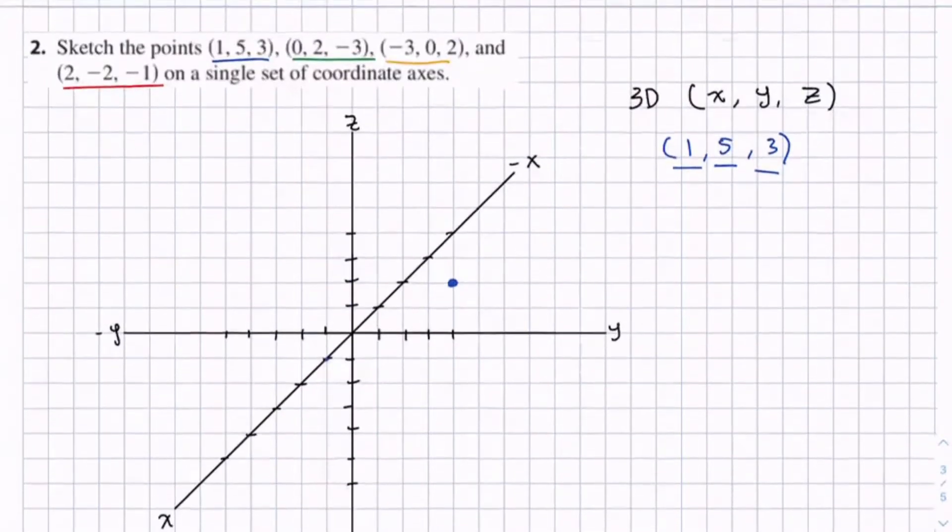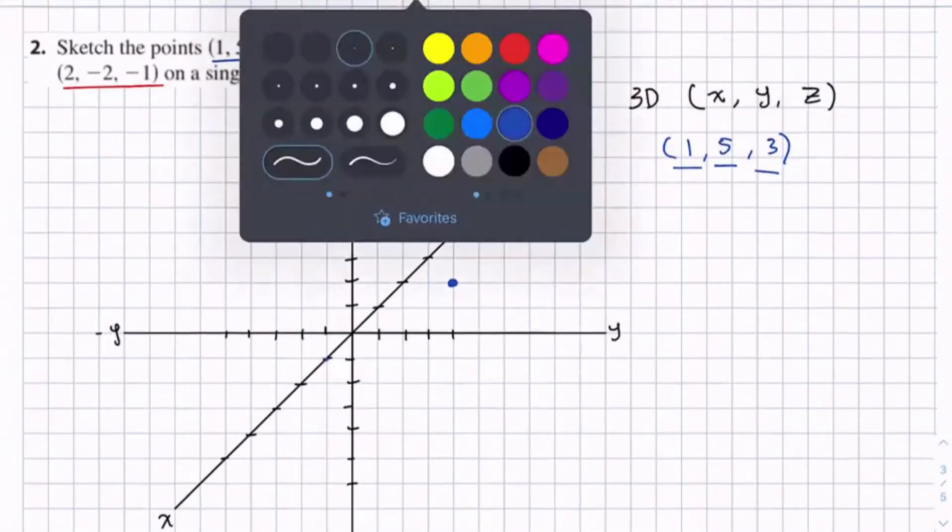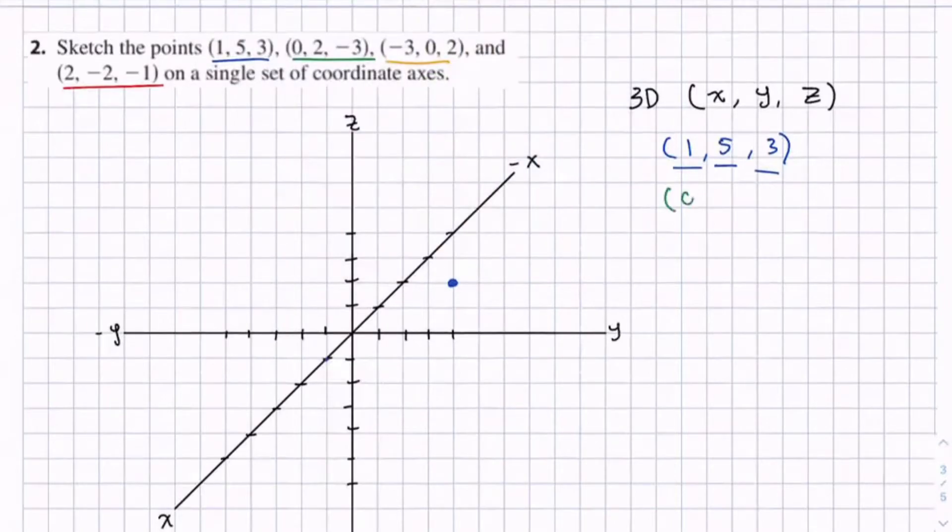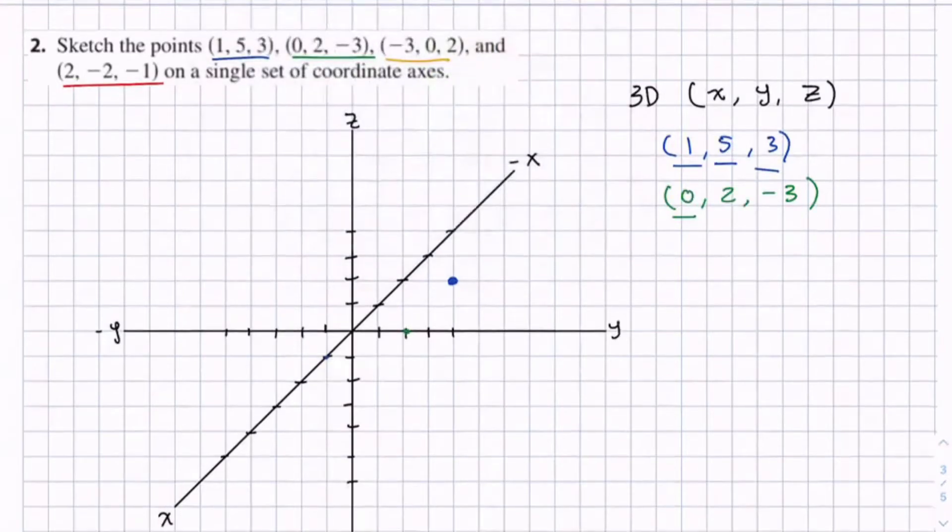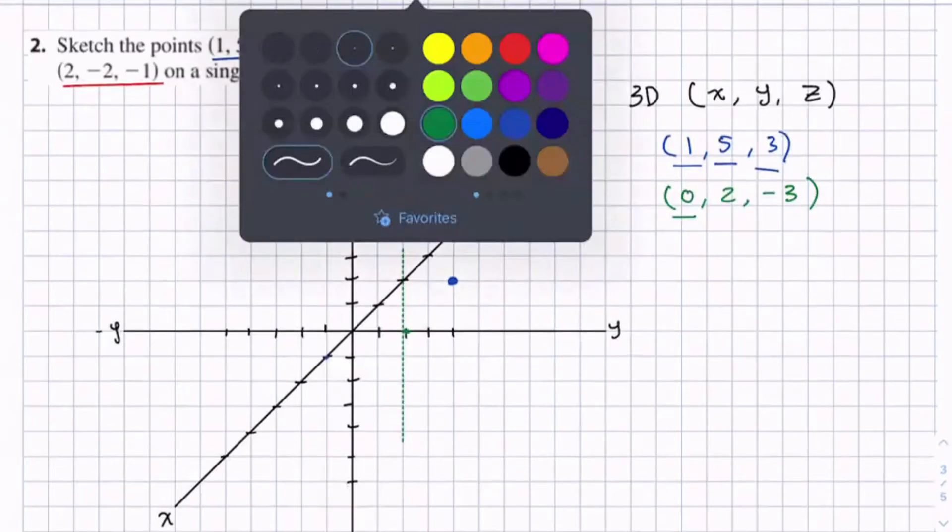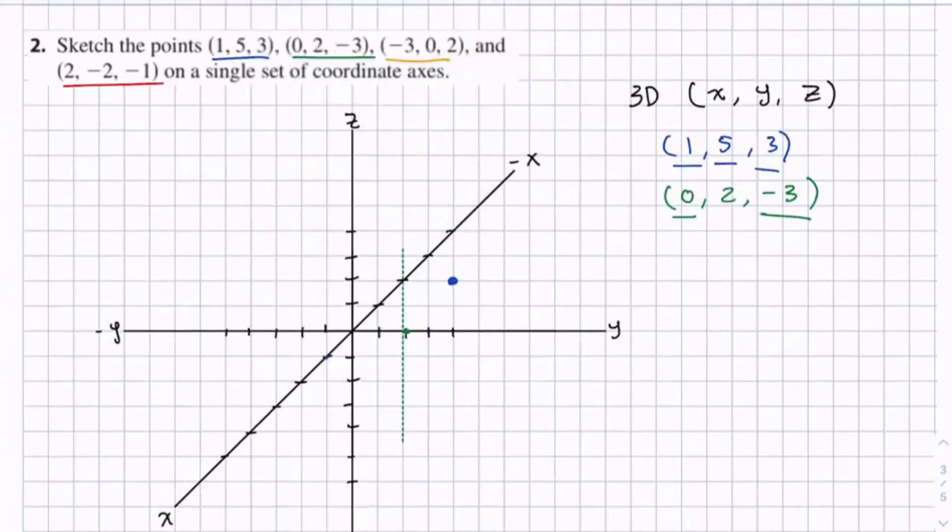So let's do the next point: (0, 2, -3). So we don't travel anywhere in the x-direction. We go two values in the y-direction. So we can draw that vertical line. And we will actually go down because it's negative 3 values: 1, 2, 3. So here's our point.